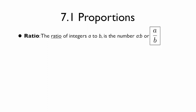So 7.1 is all about proportions. What is a proportion? In order to understand proportions, we need to understand ratios. A ratio is the ratio of integers a to b, or the fraction a divided by b. In other words, it's a way of comparing two values.